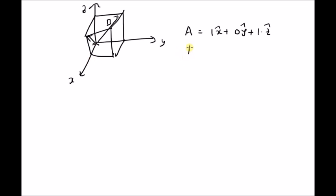Similarly, vector b can be defined as 0 times x hat plus 1 times y hat plus 1 times z hat. Clearly it is on the yz plane, therefore the x component is 0 and the y and z components are equal to 1 each.